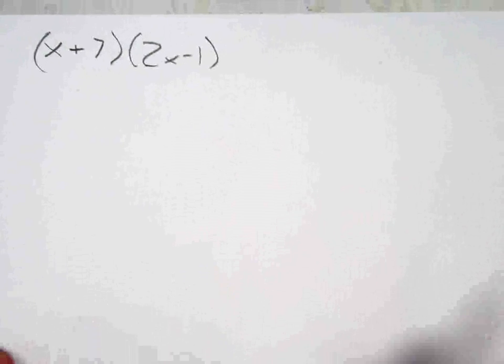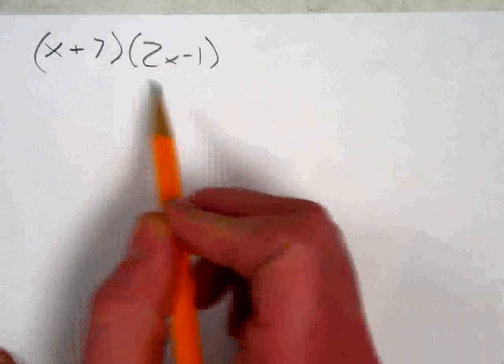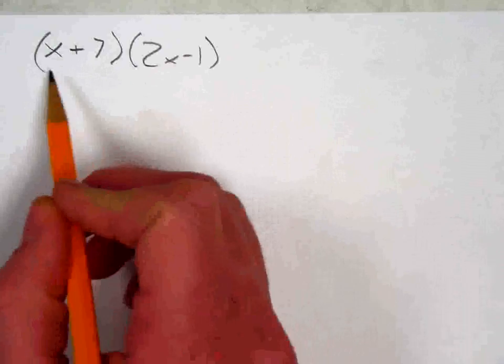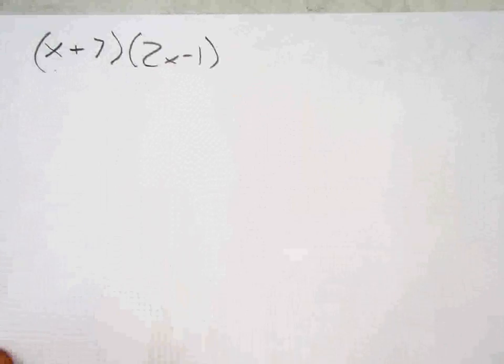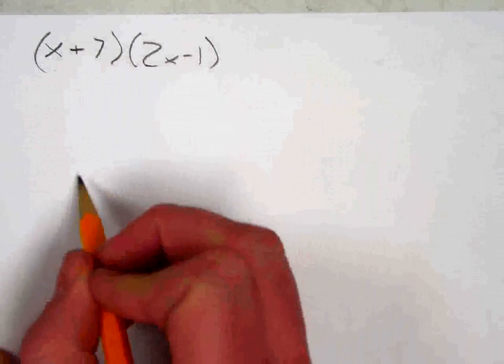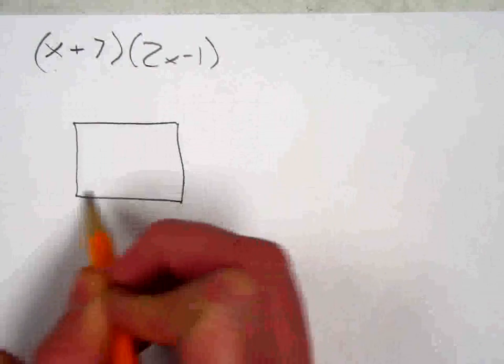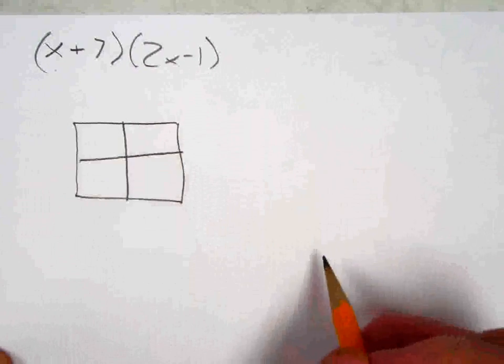Well, first off, I want to set up my box, and my box is going to be 2 by 2 because I've got two terms in each of my two factors. So I'm just going to draw a box that is 2 by 2.